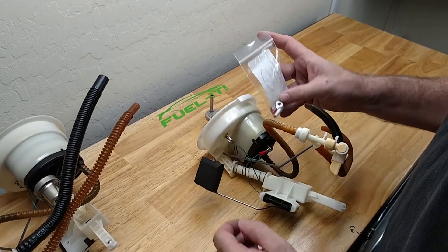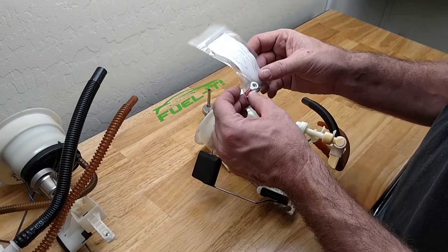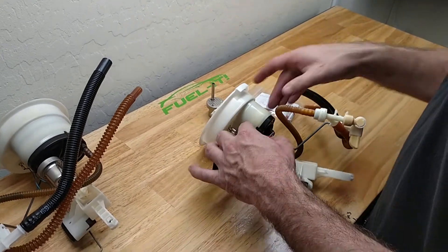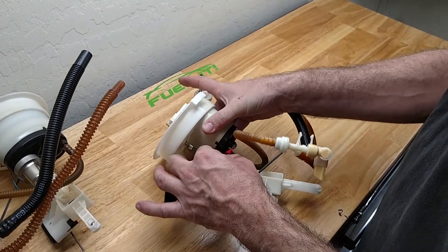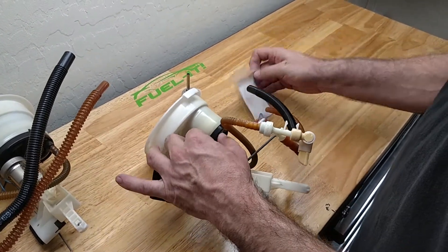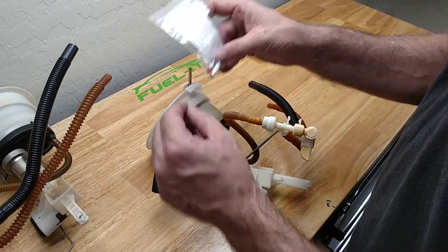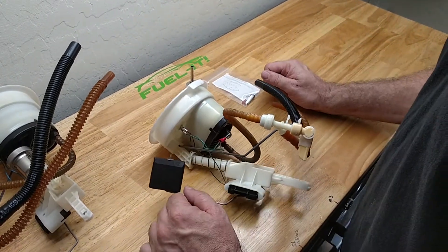For the electrical connection, you'll go ahead and cut that little spade connector off of there and then connect the new ring terminal so that as you thread that in, you complete that ground circuit.